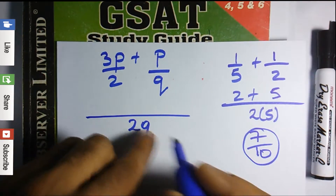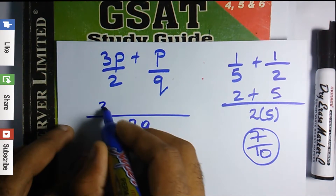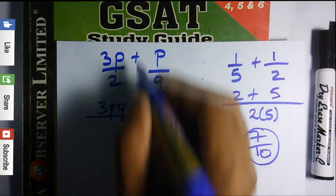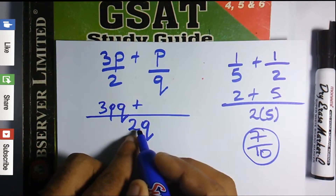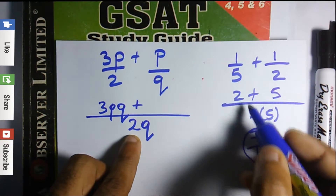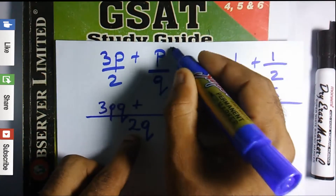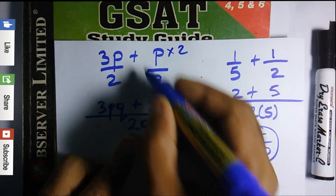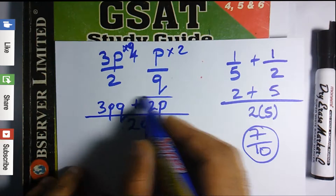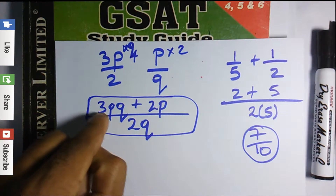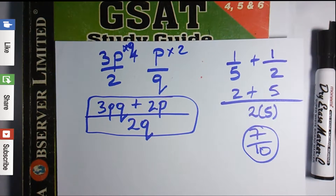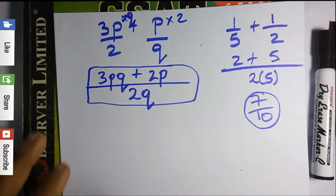For 3p/2 + p/q with LCM = 2q: 2 into 2q goes q, so we multiply the numerator by q — that gives 3pq. Then q into 2q goes 2, so we multiply the numerator by 2 — that gives 2p. Since there are no like terms, the answer is (3pq + 2p) / 2q.